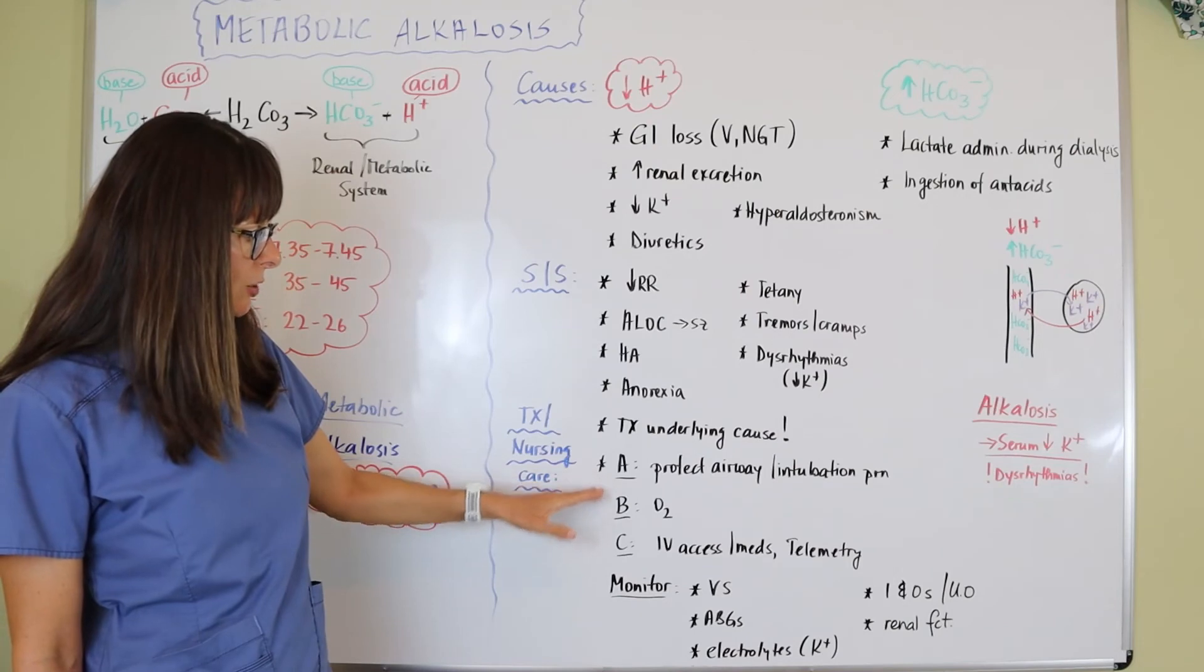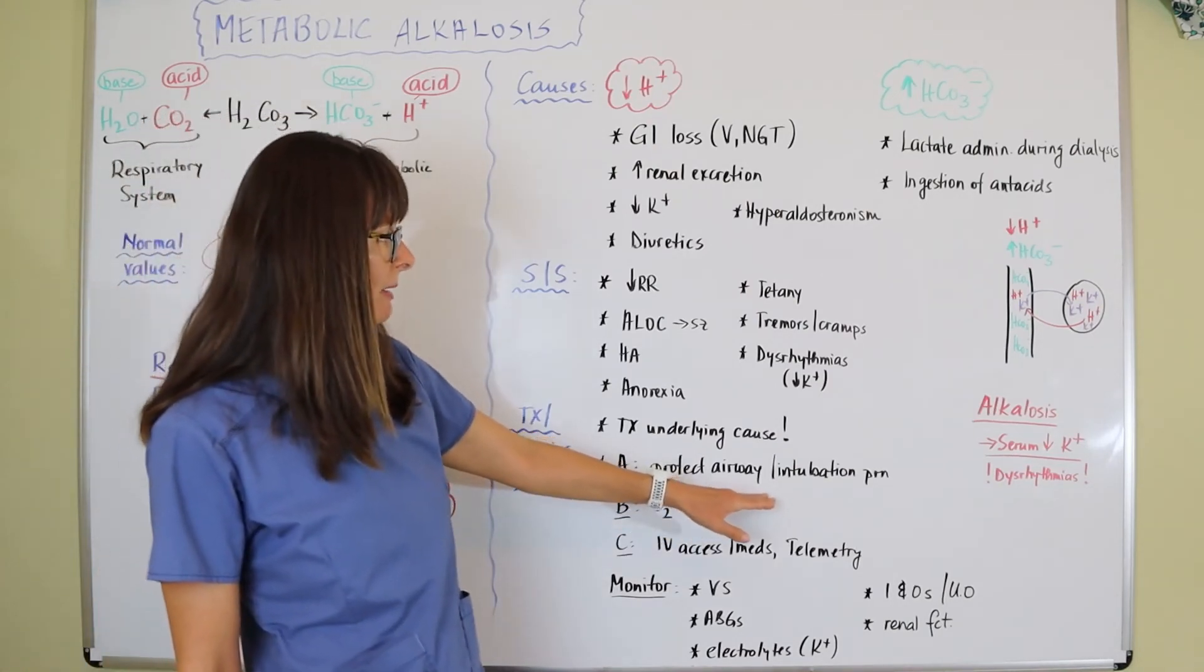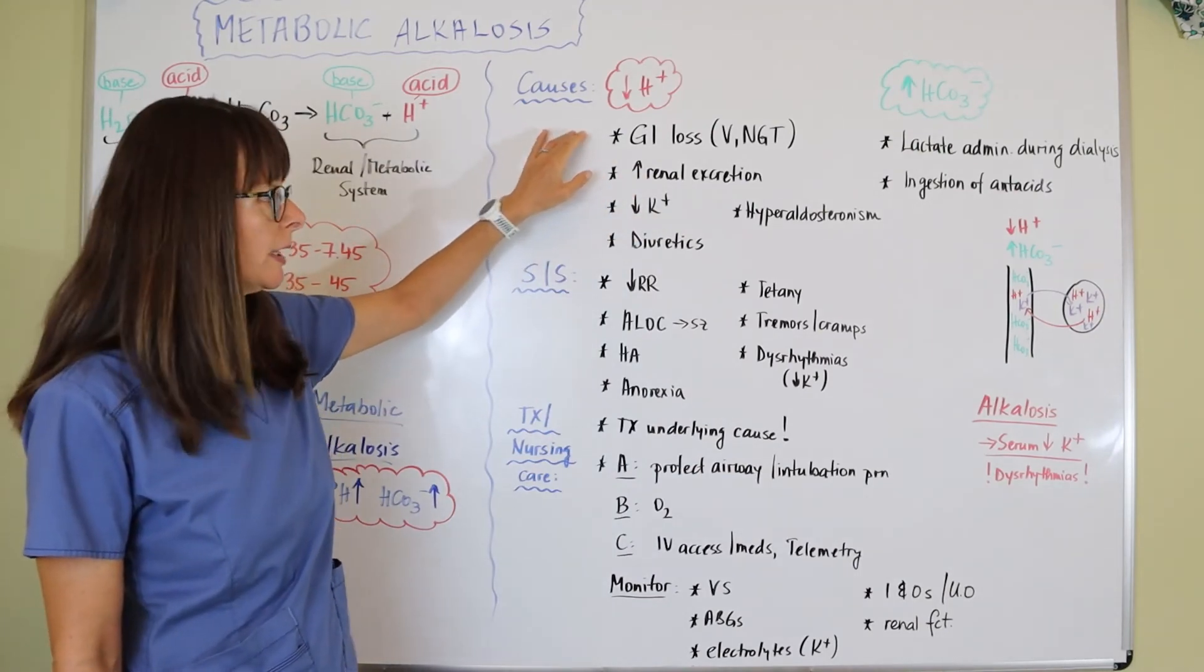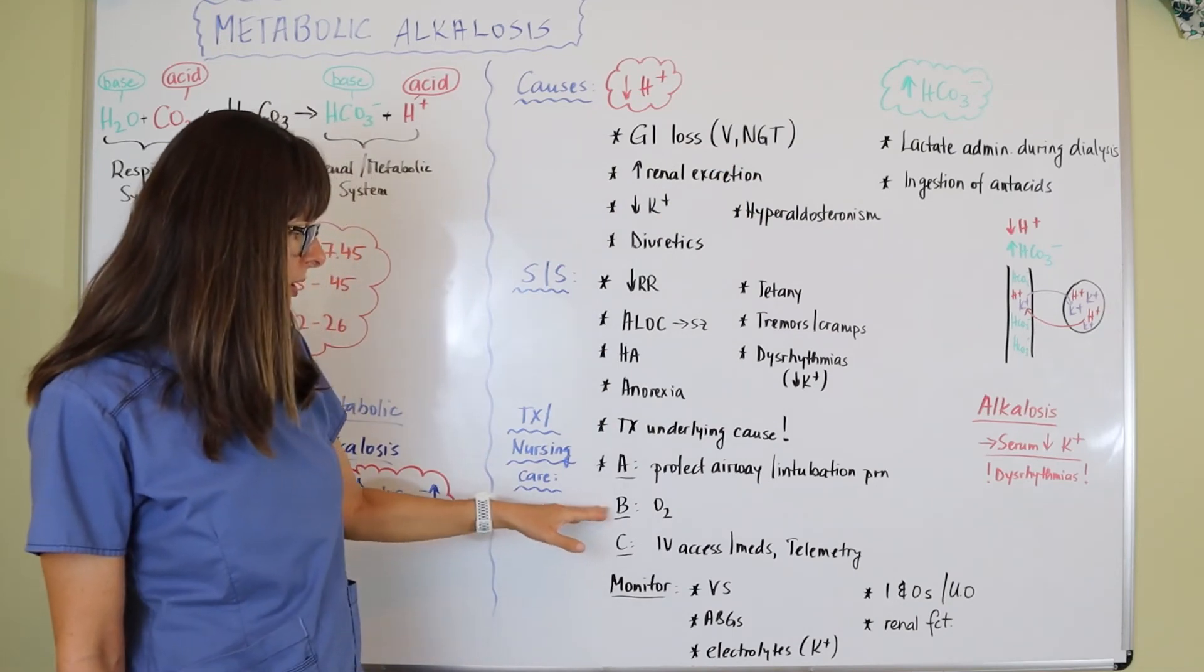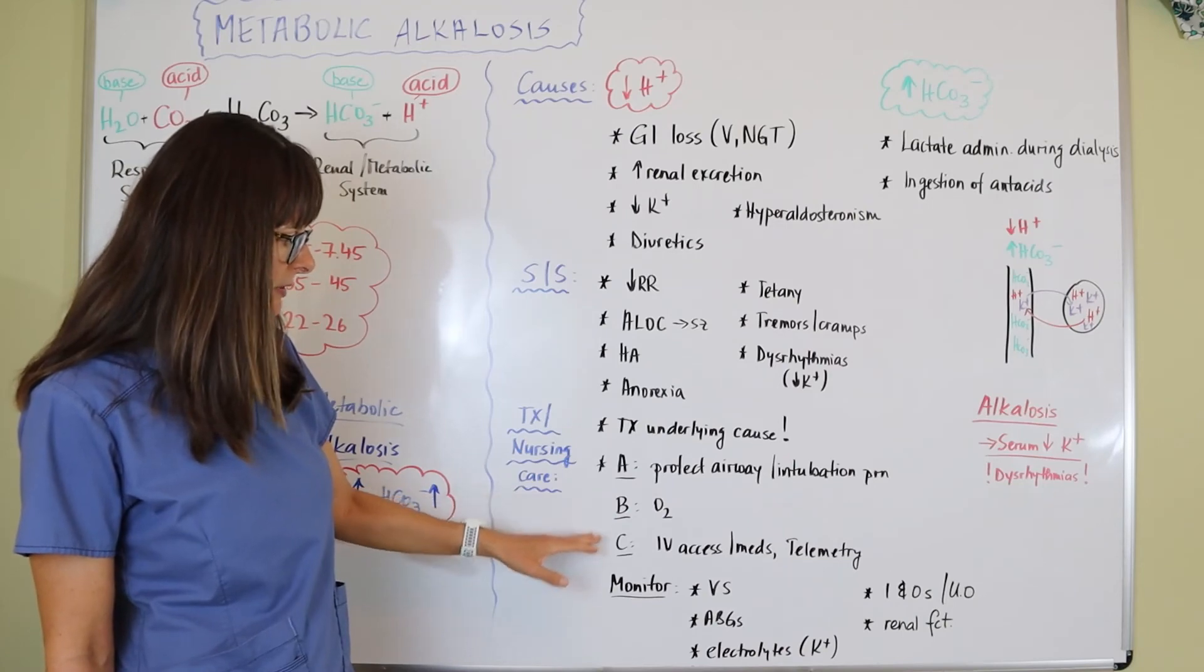We always come back to our ABCs. For airway, we have to protect their airway. Maybe they need to be intubated if they're vomiting so much that they can't protect their airway or if there's something going on with their NG tube.